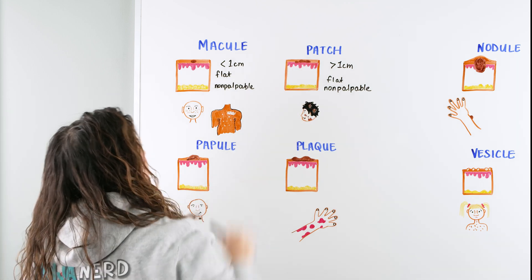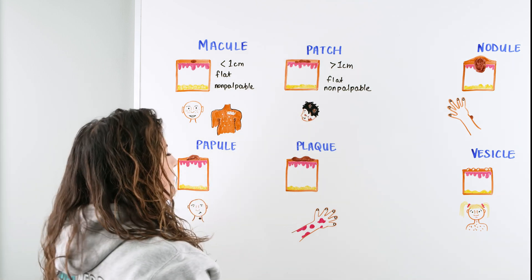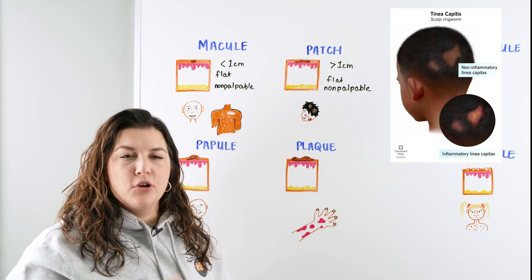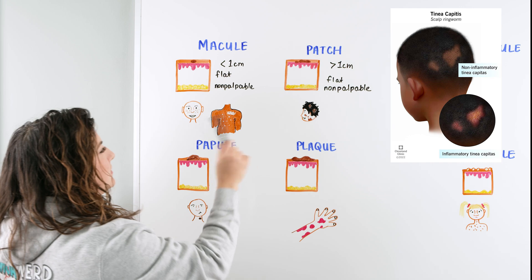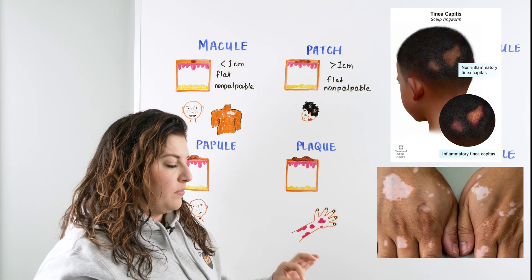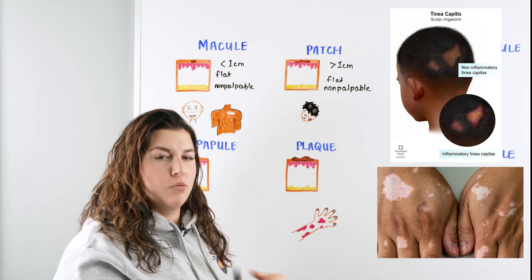Tinea versicolor along with a couple other things that could be macules can also be a combination or have bigger formations. Those bigger formations are just what we call patches. Patches are very similar to macules in that they are flat and non-palpable as well. But they are going to be greater than one centimeter in diameter, meaning they're just going to be a little bigger. That could be things like tinea capitis or vitiligo with some discolorations in the skin.